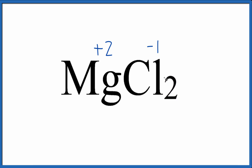So the oxidation number for Mg is plus 2, and then each chlorine has an oxidation number of minus 1. This is Dr. B with the oxidation numbers for MgCl₂, magnesium chloride. Thanks for watching.